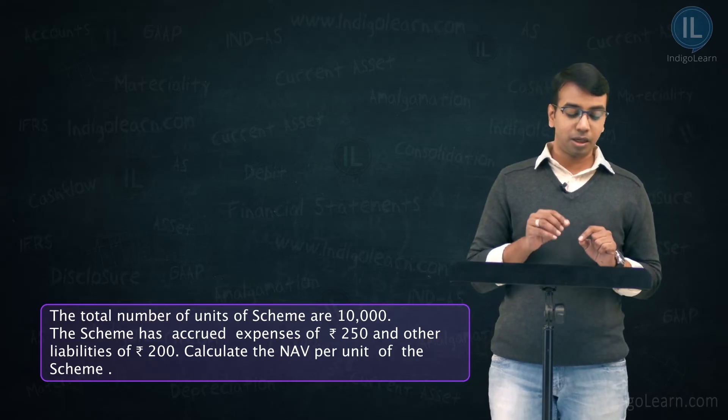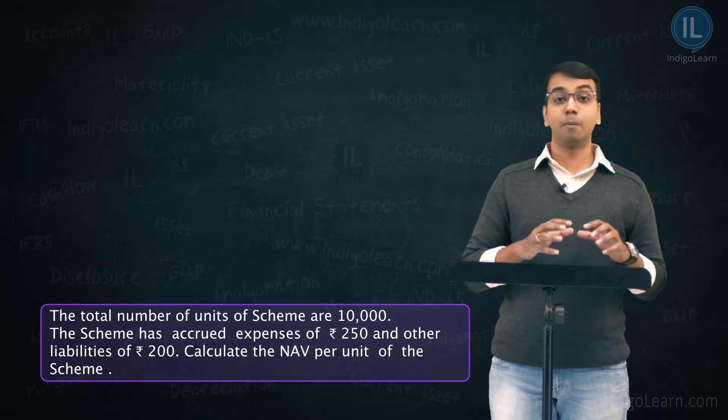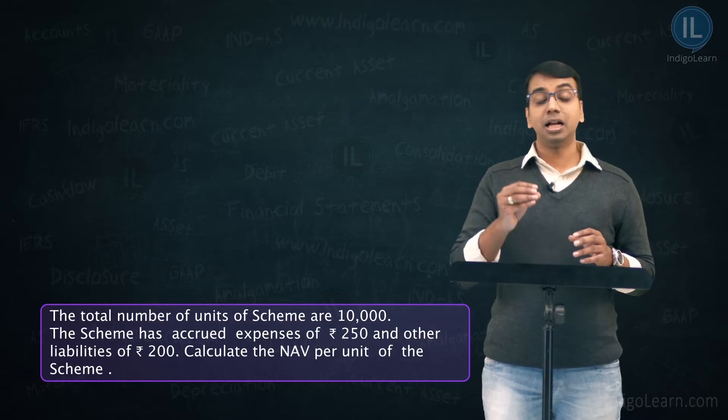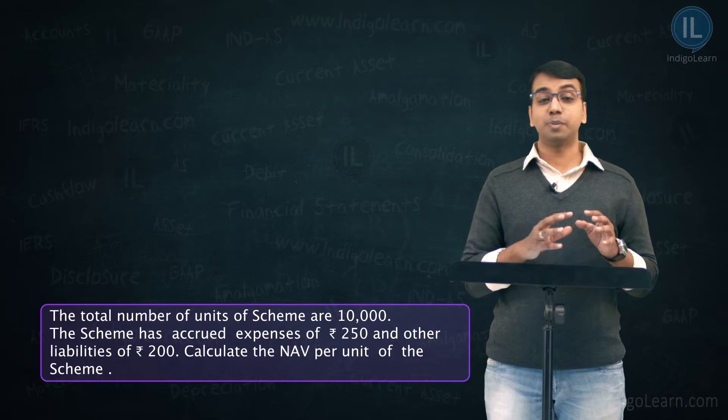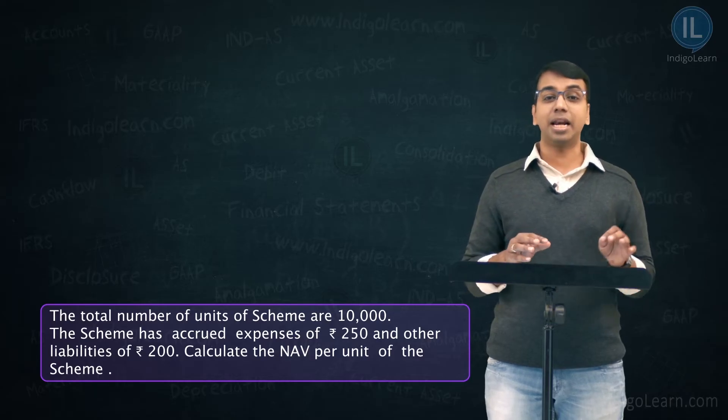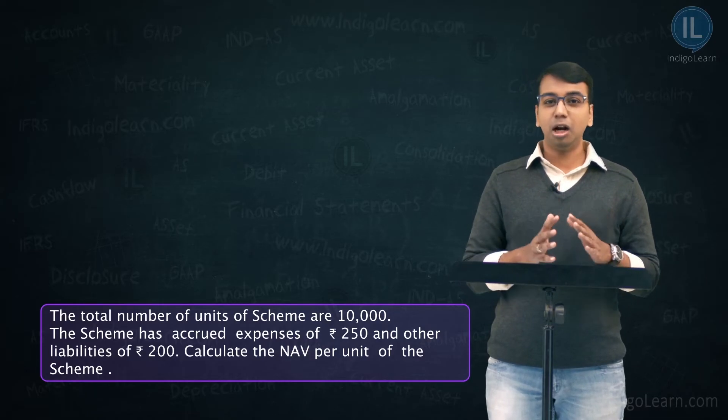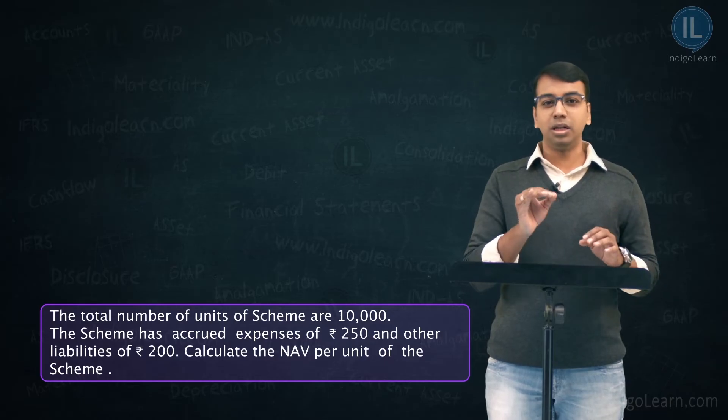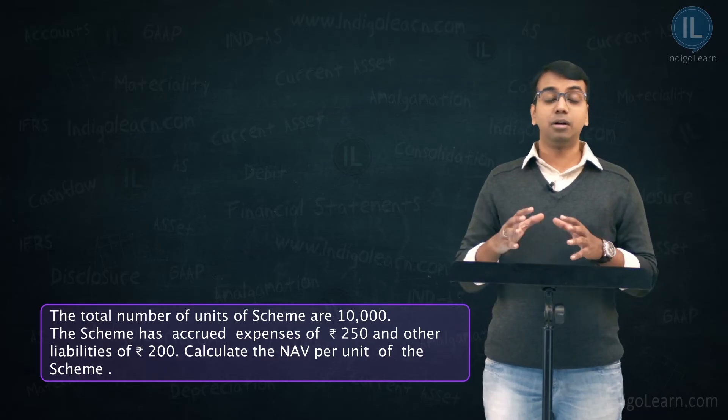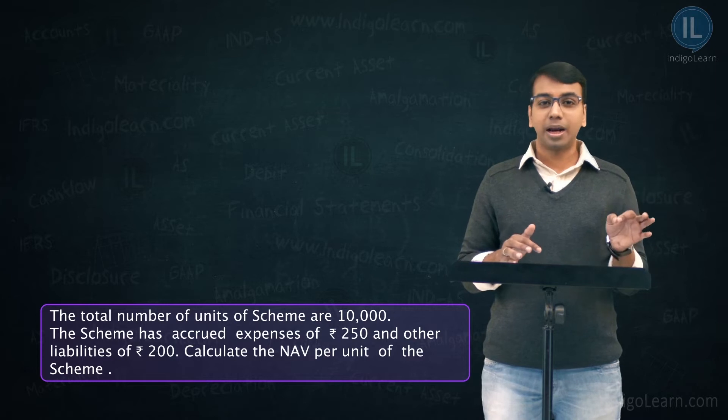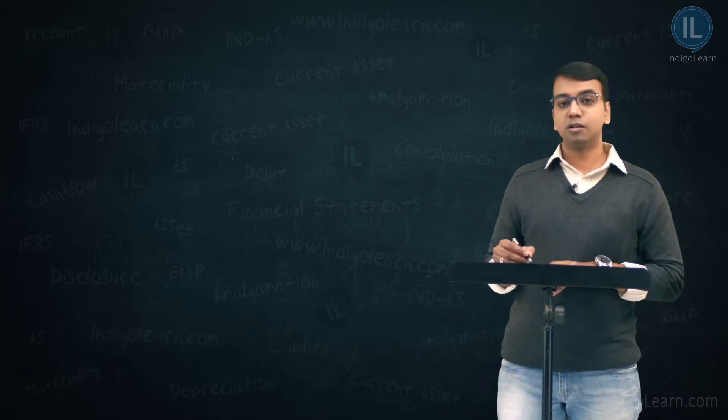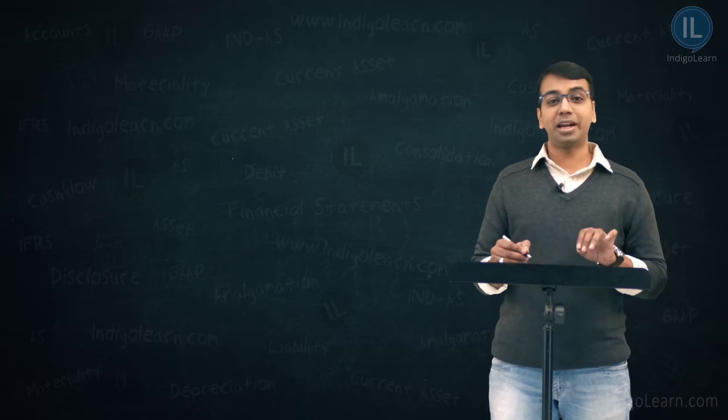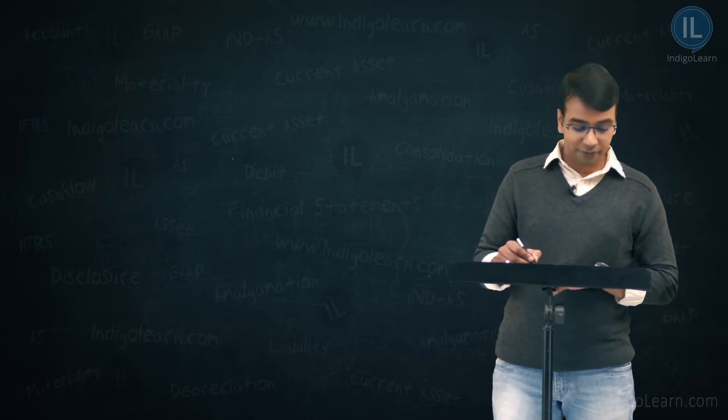Calculate the NAV per unit of the scheme. Information regarding number of shares and market price is given, accrued expenses and liabilities are given, we are required to compute the NAV. It is similar to the problems what we have discussed, the only change is instead of giving the market value of the portfolio, you are required to compute the market value of the portfolio. Let us compute the market value of the portfolio.